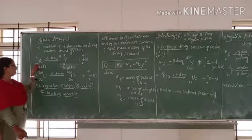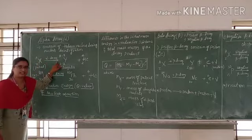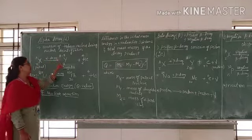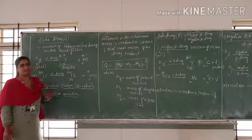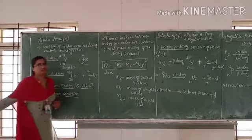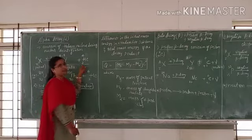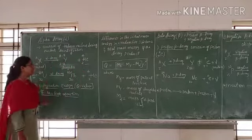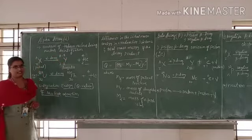When this parent nucleus undergoes nuclear disintegration — that is alpha decay — it becomes the daughter nucleus with the emission of helium. We already know that helium has atomic number 2 and mass number 4. Y represents the daughter nucleus.